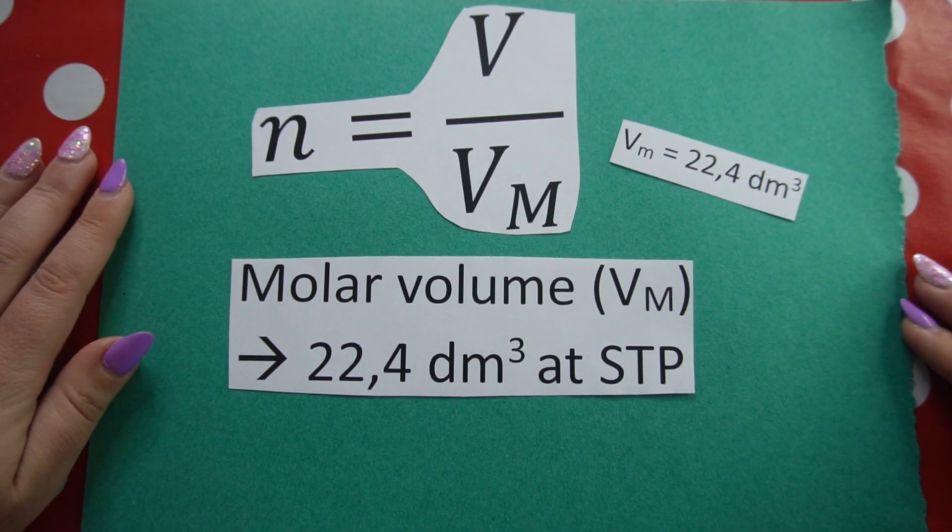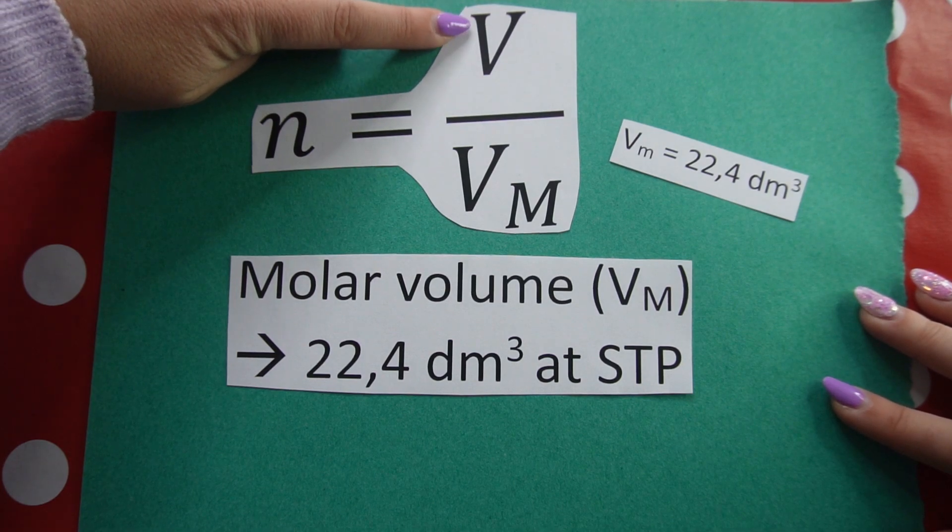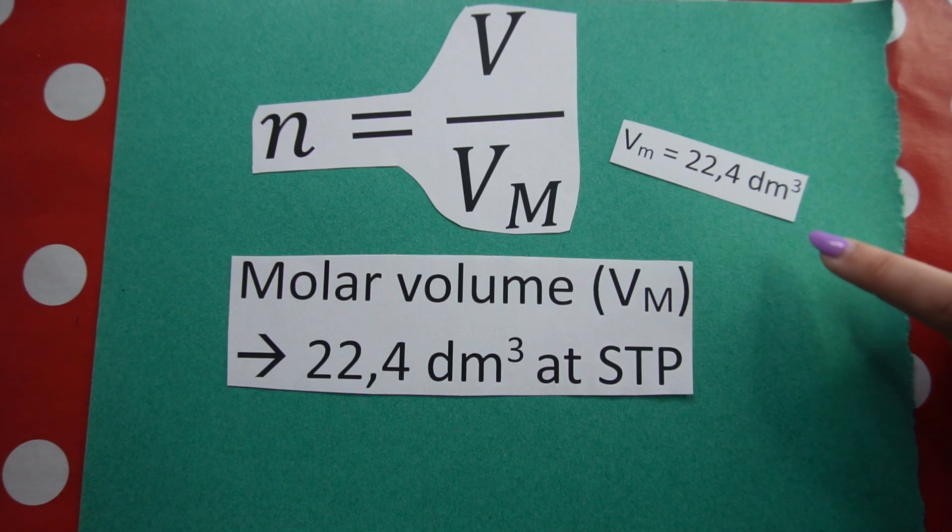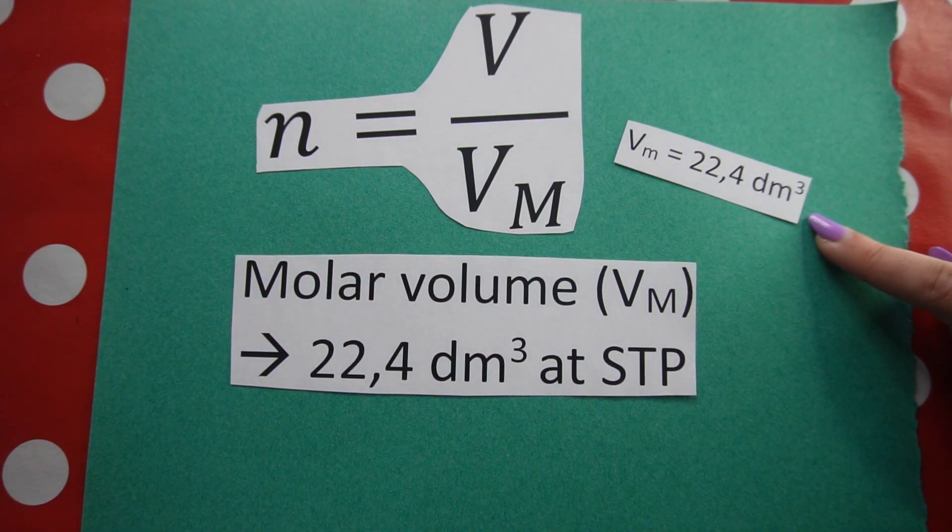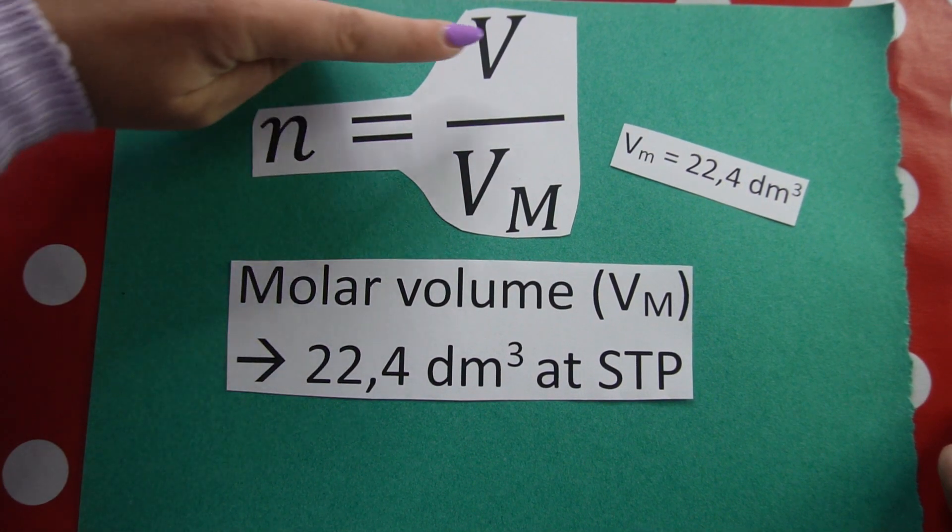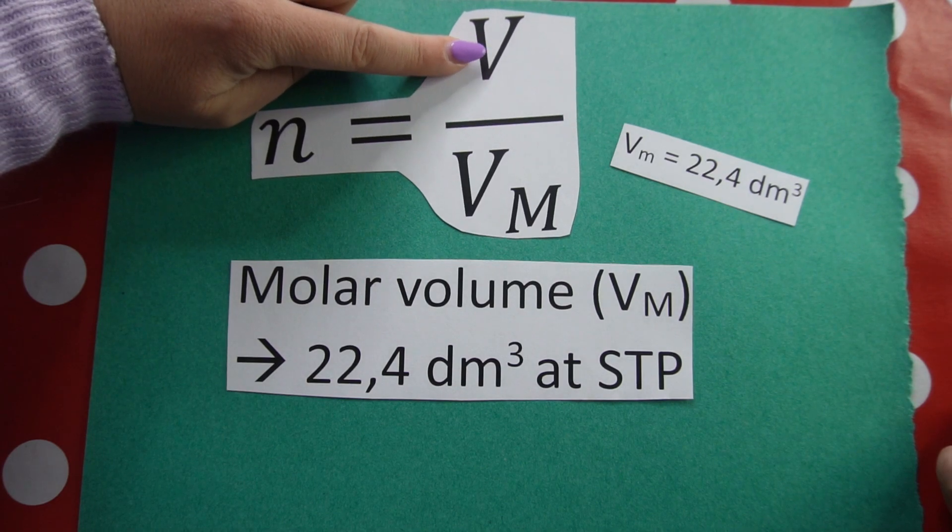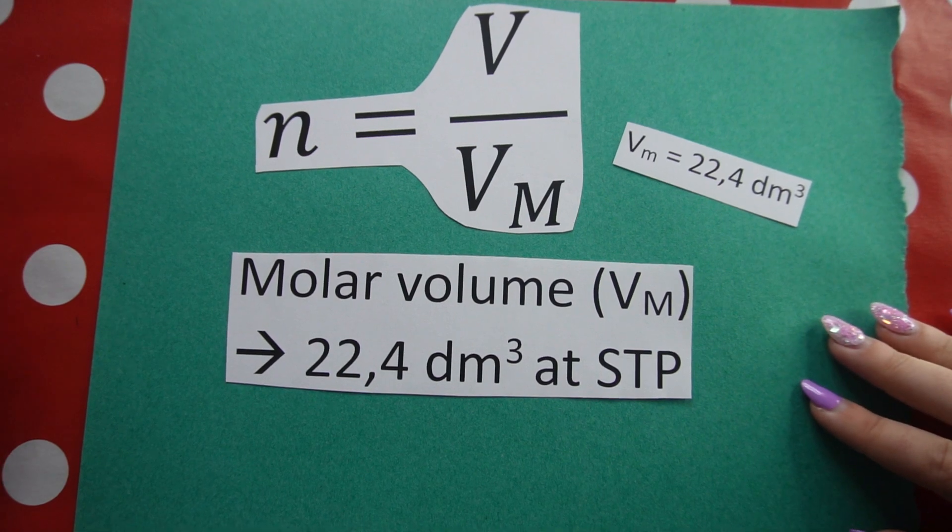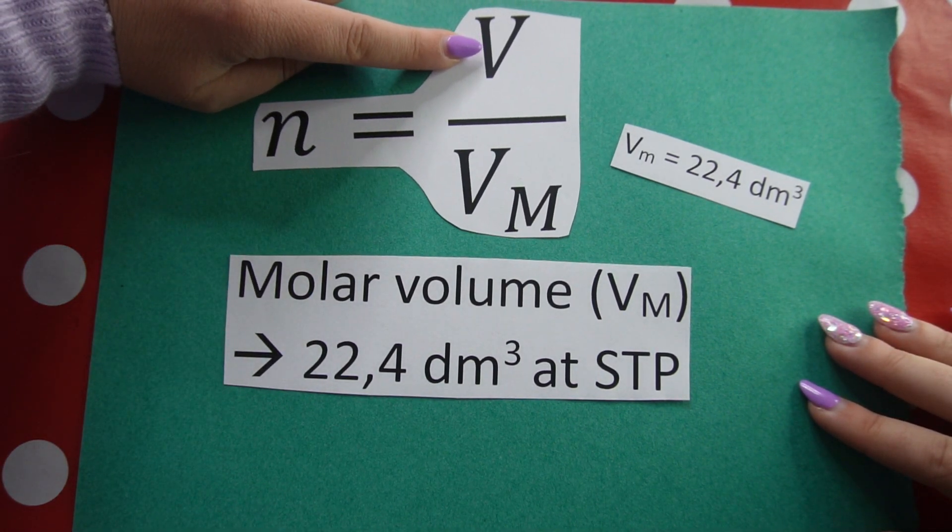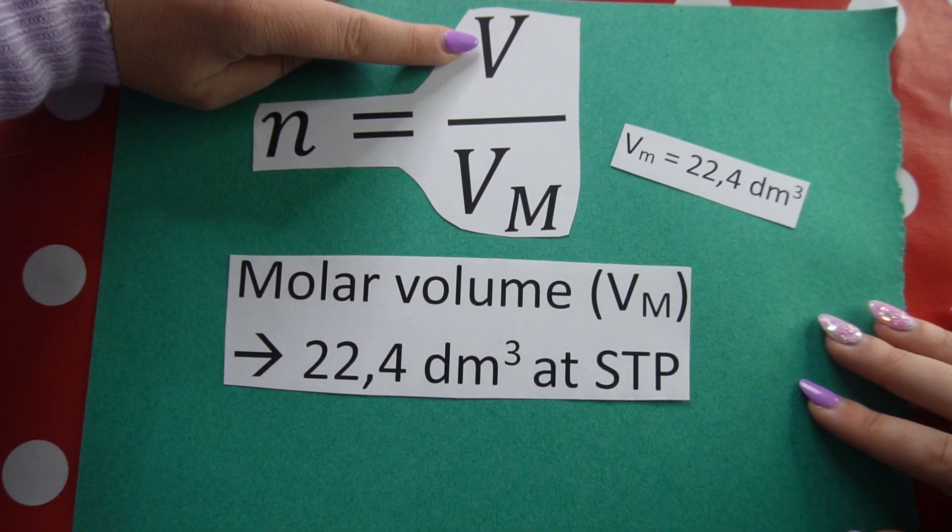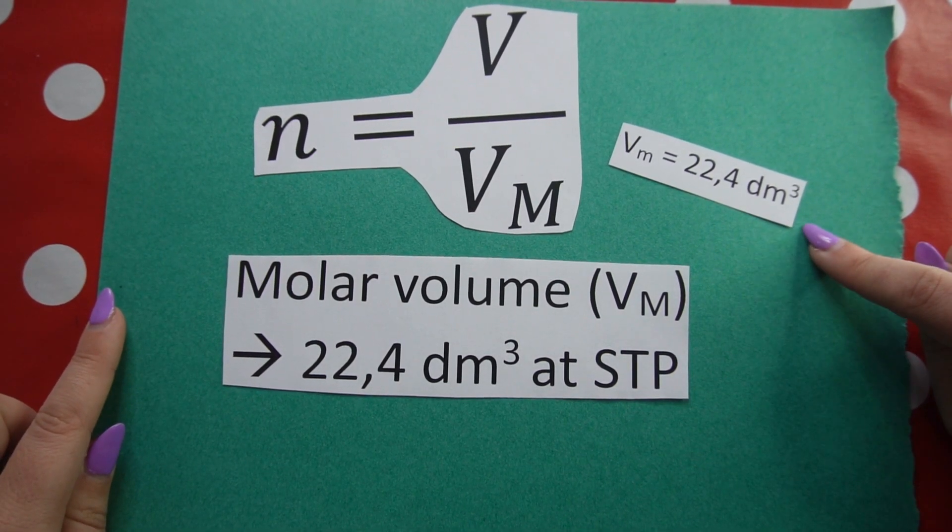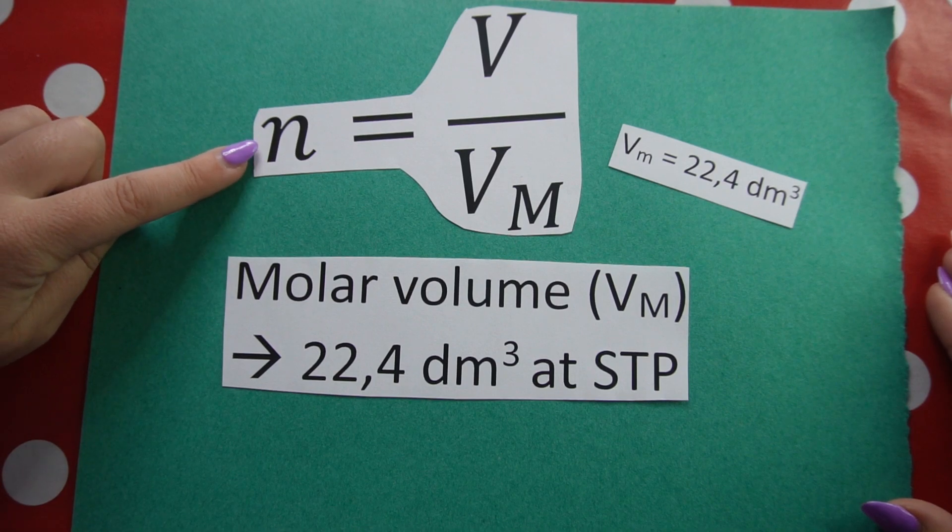That means that if I want to work out the volume of any gas at STP, I use molar volume - that tells me that one mole of any gas is 22.4 cubic decimeters - and I use the number of moles. That will get me the volume at STP. I can also use this formula the other way around. If I'm given the volume of gas at STP, and I know that one mole of that gas has a volume of 22.4 cubic decimeters, I can work out how many moles I'm dealing with.